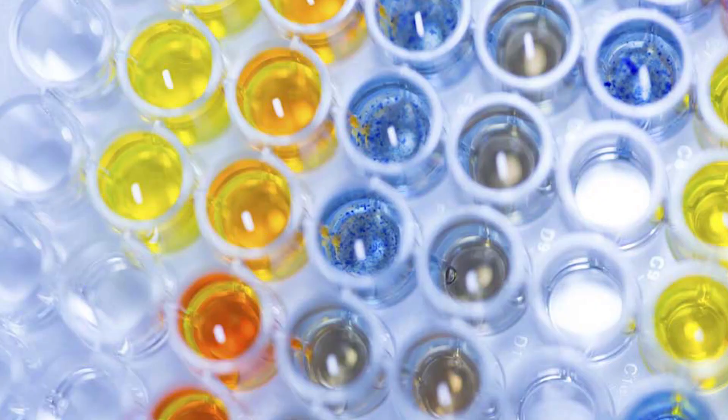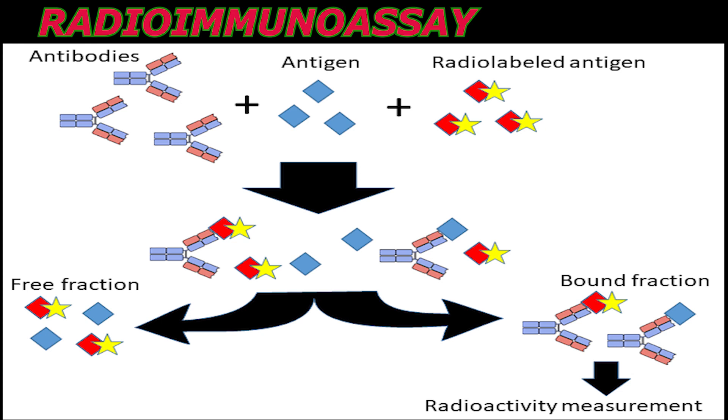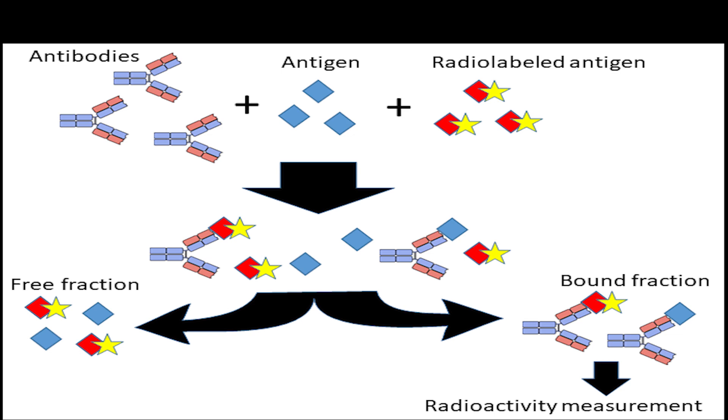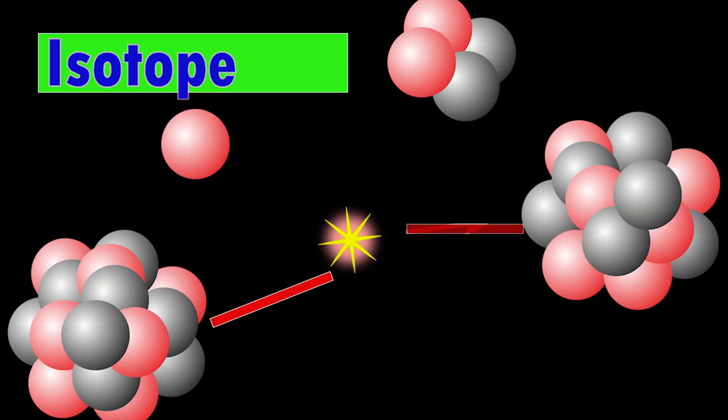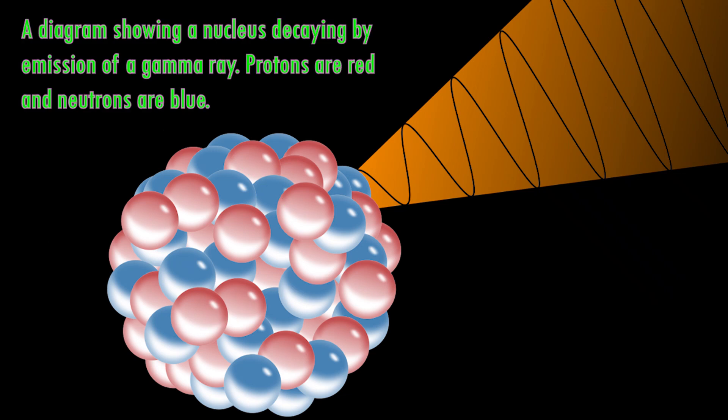Radioimmunoassay. Radioactive isotopes can be incorporated into immunoassay reagents. Radioactivity emitted by bound antigen-antibody complexes can be easily detected using conventional methods. RIA methods are not used in labs due to potential dangers present by working with radioactive materials.